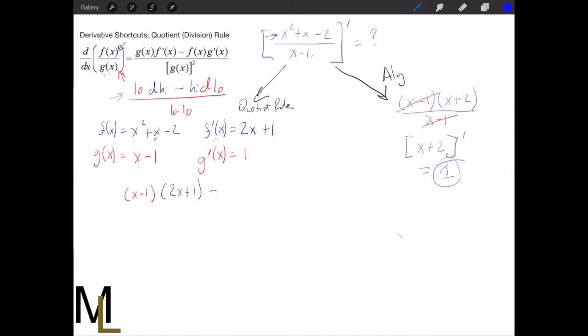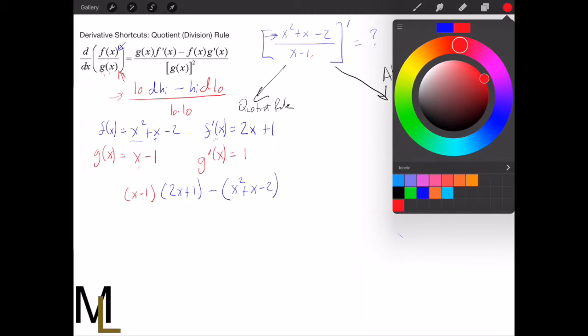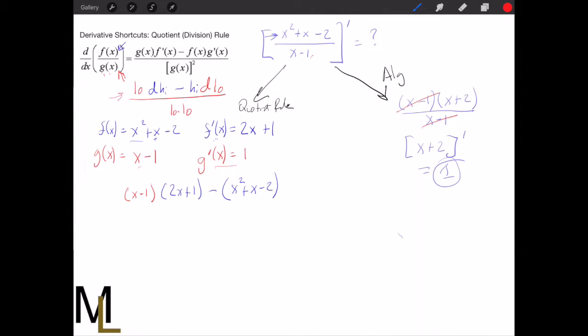Okay. Then we're going to minus high d low. So high is just going to be the f of x here. x squared plus x minus 2. And then d low. So that's the derivative of the low, which is given here. So that's just 1. So multiply by that.